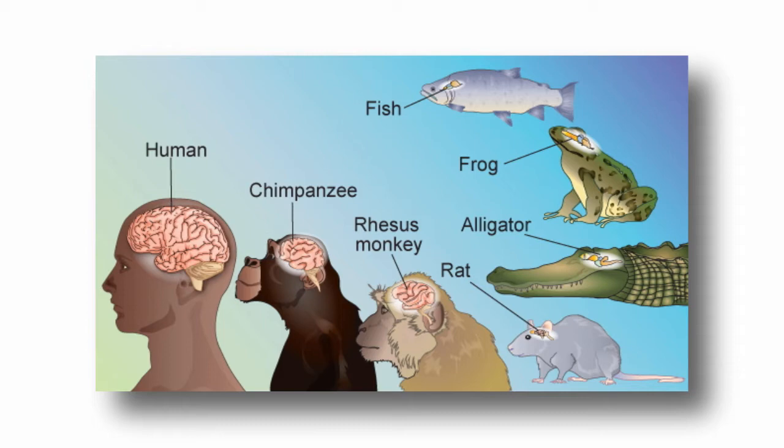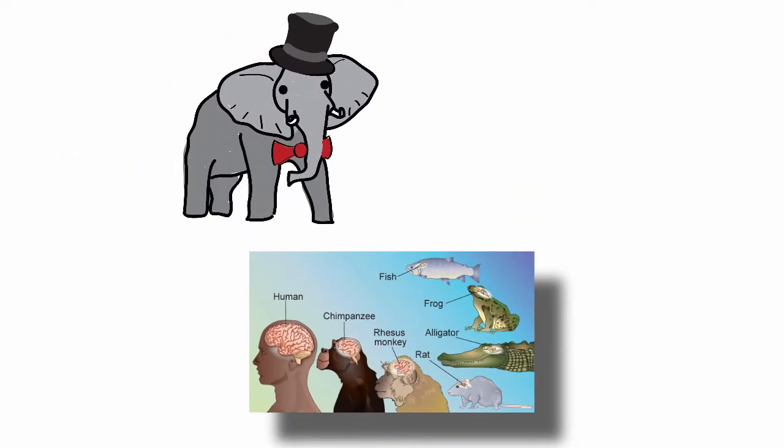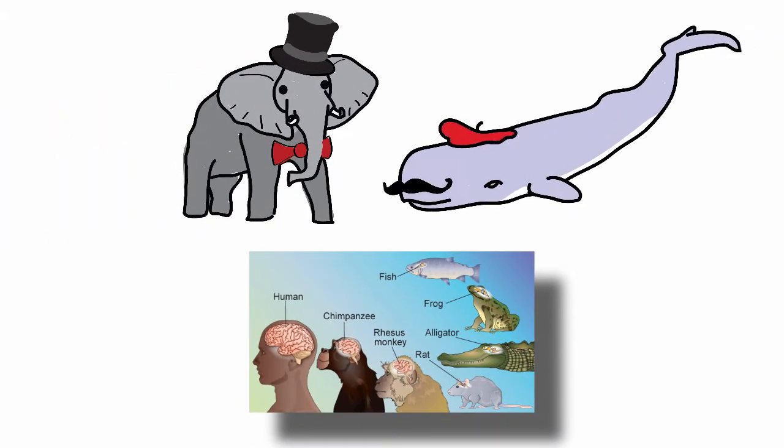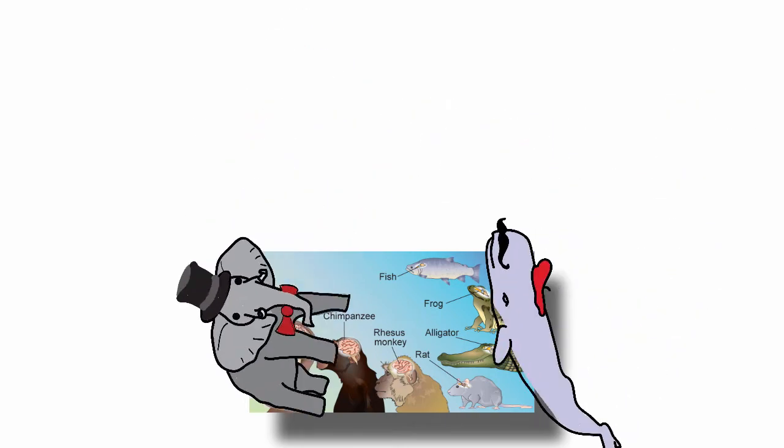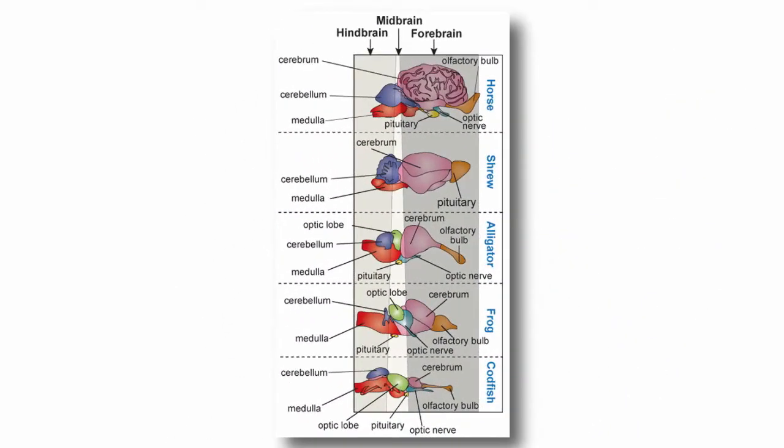If it is only size that matters, then humans would display less sophistication in terms of behavior and abilities than an elephant or whale. Yet we know this is not the case. For this reason, a more meaningful approach is to examine the brain volume with respect to different brain structures.